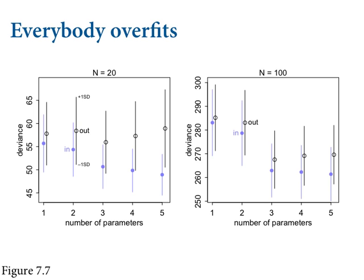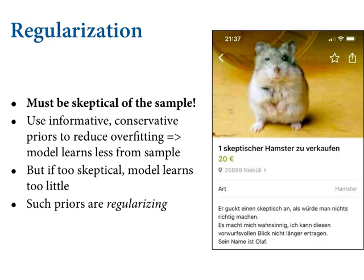The first thing we want to do is regularize — we don't want to use flat priors. I've been waiting months to use the skeptical hamster, Olaf. We have to be skeptical like Olaf and be skeptical of our models. One way to do that is to build skepticism into how they're trained on the sample, through regularizing priors. This is what I've been nudging you toward with prior predictive simulations: choose priors which can only produce possible outcomes.